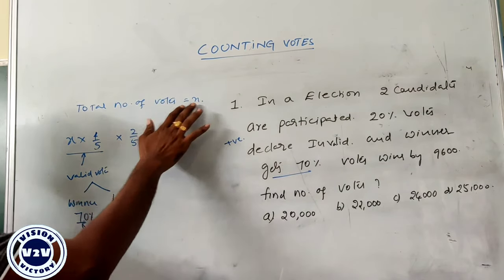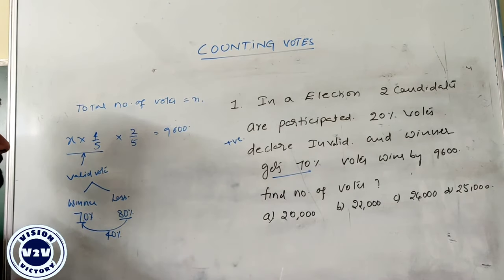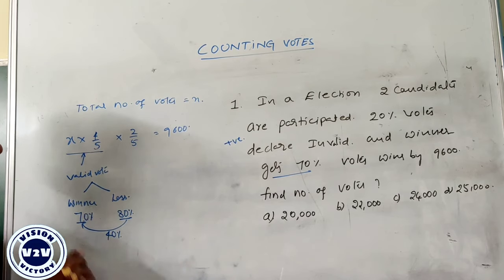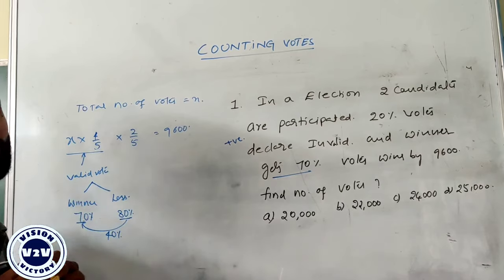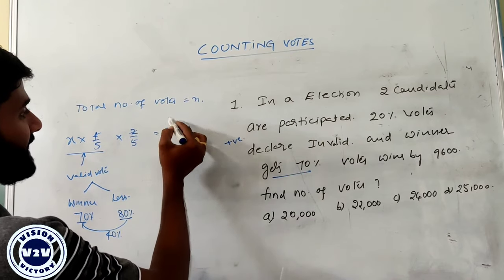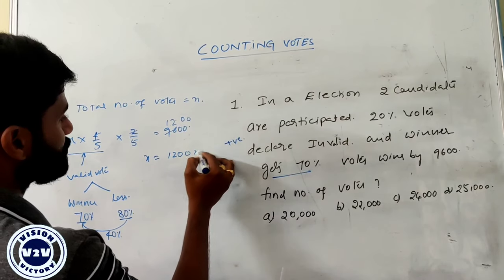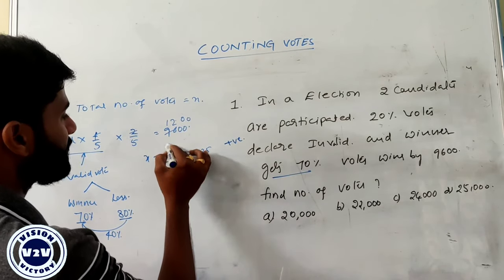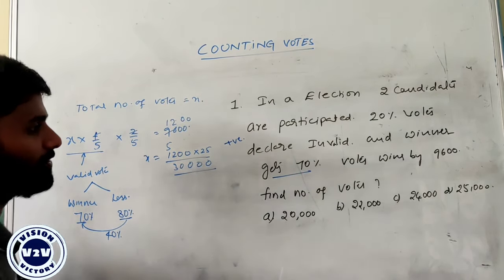This is the calculation. Out of 20 percentage declared invalid, we have valid votes of 80 percentage. We distribute winner and loser: winner gets 70 percentage, loser gets 30 percentage, and winner wins by 40 percentage. He wins by 9600 means 40 percentage of these votes exactly equals 9600. After cancellation, 4 twos are 8, 8 twos are 96, giving a value of 1200. Then x equals 1200 into 25. Find the number of votes.